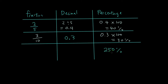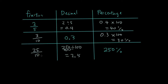So 250% divided by 100, and you will get 2.5 — move the decimal point to the left 2 units — 2.5. There is one number after the decimal point, so that's 25 over 10. I've already done a few tutorials on fractions, so feel free to go through those. 25 divided by 5 is 5, and 10 divided by 5 is 2.